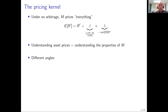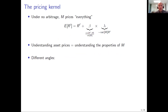Let me remind everyone why we care so much about the pricing kernel. It's the standard textbook result — the fundamental equation that says if there's no arbitrage, then the pricing kernel prices everything. One way to express this is to say I can write down a one-factor model with the pricing kernel as the only factor that explains the returns of every asset.